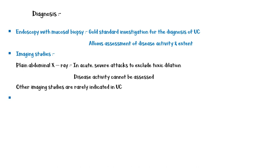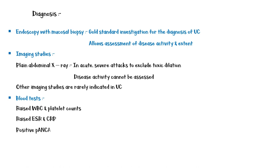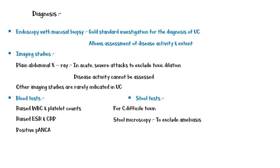Blood tests will show raised white blood cell and platelet counts, raised ESR and CRP, and positive P-ANCA — which is contrary to Crohn's disease, where P-ANCA is negative. Stool tests are indicated to look for Clostridium difficile toxin and stool microscopy to exclude amoebiasis. Fecal calprotectin and lactoferrin levels are also elevated in ulcerative colitis.